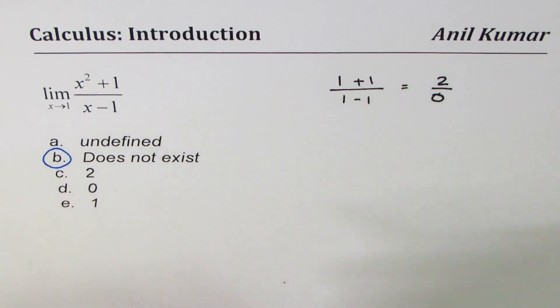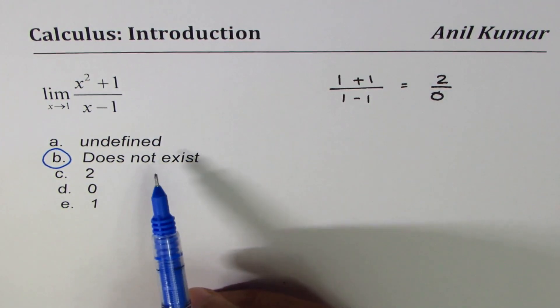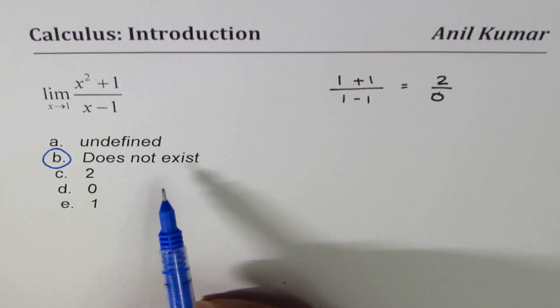So the limit is whether it exists or not. If it exists, we have a value. If it does not exist, we write does not exist. We never say that the limit is undefined, you understand? So 2 over 0 indicates that the limit does not exist.